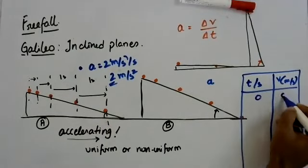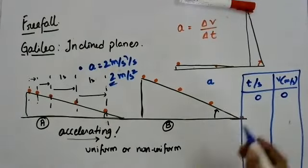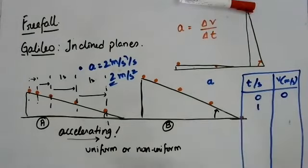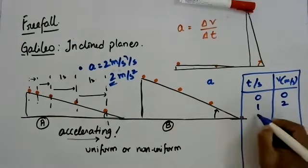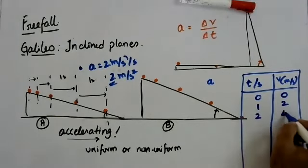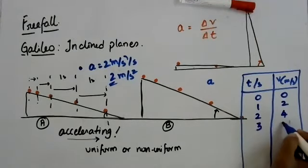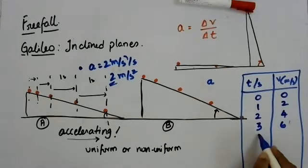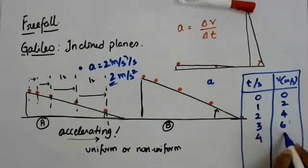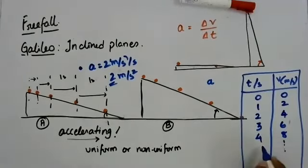So, let us chart out the time in seconds and the velocity in meters per second for this object. So, I said at time t is equal to 0 second, velocity is also 0. The time t is equal to 1 second, velocity will become 2 meters per second. At 2 seconds, the velocity will become 4 meters per second. At 3 seconds, 6 meters per second. At 4 seconds, 8 meters per second. And of course, so on and so forth, don't become boring.